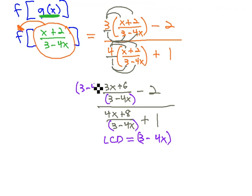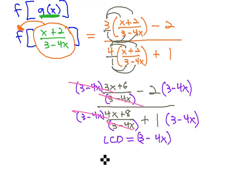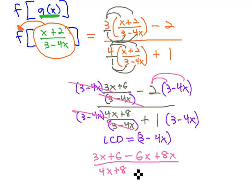So let's multiply everything by 3 minus 4x, 3 minus 4x, left and right, top and bottom, 3 minus 4x, 3 minus 4x. Because when we do that, the 3 minus 4x is divided out on the left side, giving us just 3x plus 6. Distribute the negative 2, negative 6x plus 8x, over 4x plus 8, plus distribute the positive 1, 3 minus 4x.